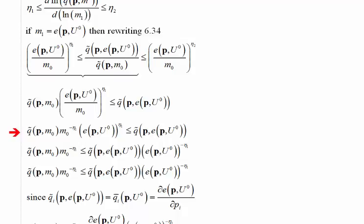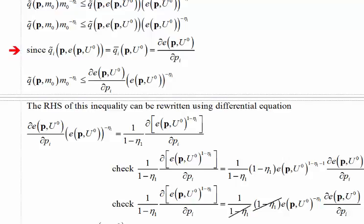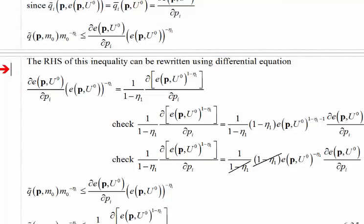Simplifying by taking the m0 term out of the second term on the left-hand side gives us this. We divide both sides through by e(p, u0) to the eta1 to obtain this expression. Now we use the fact that the Marshallian demand, when evaluated at a particular point, is also equal to the Hicksian demand — which, of course, is the derivative of the expenditure function with respect to price. So we substitute in the derivative of the expenditure function with respect to price in place of the Marshallian demand function.